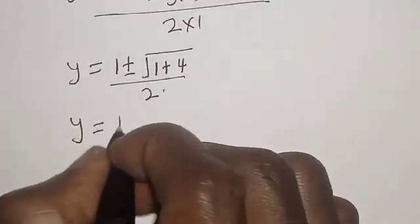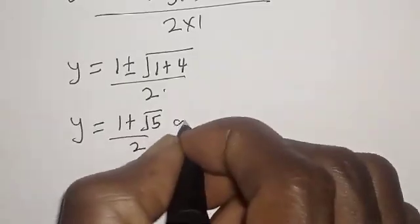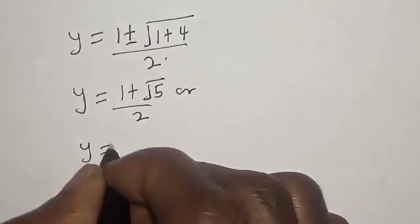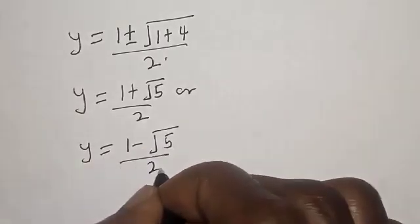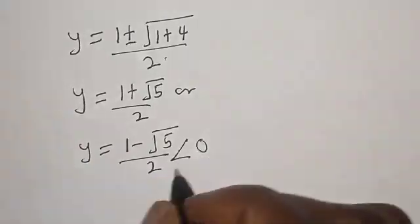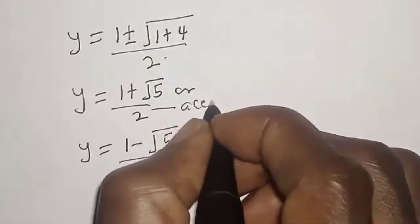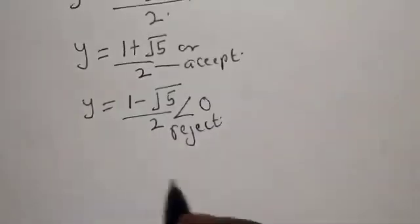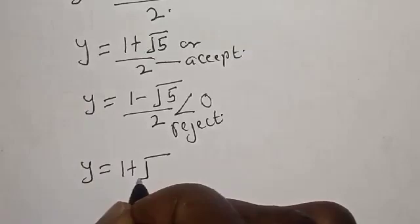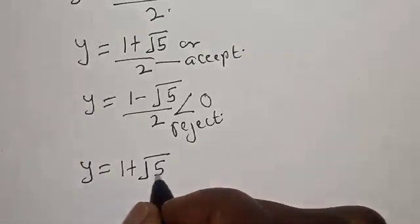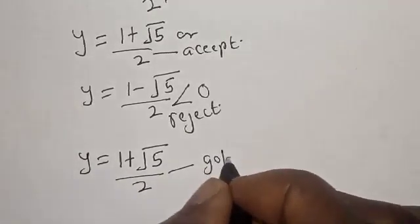So y equals 1 plus square root of 5 over 2, or y equals 1 minus square root of 5 over 2. The second solution is less than 0, so we reject it and accept the first. Therefore y equals 1 plus square root of 5 over 2. This is called the golden ratio.